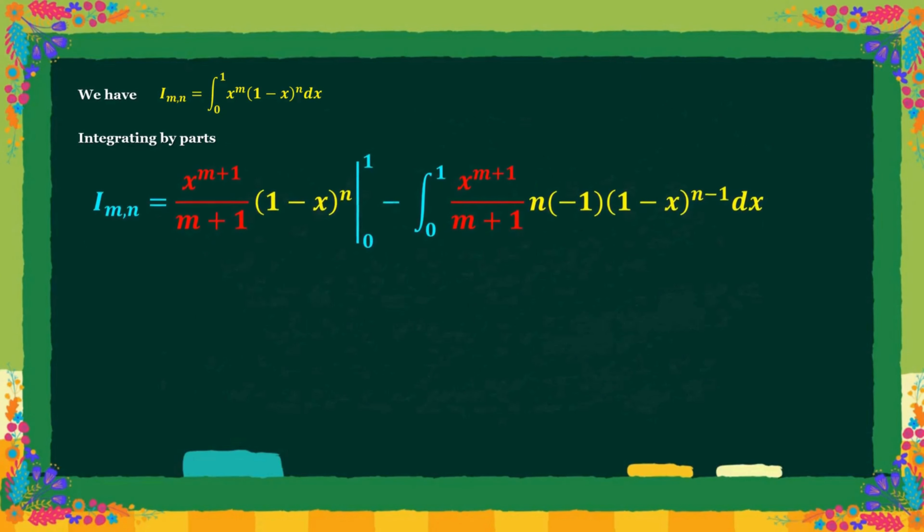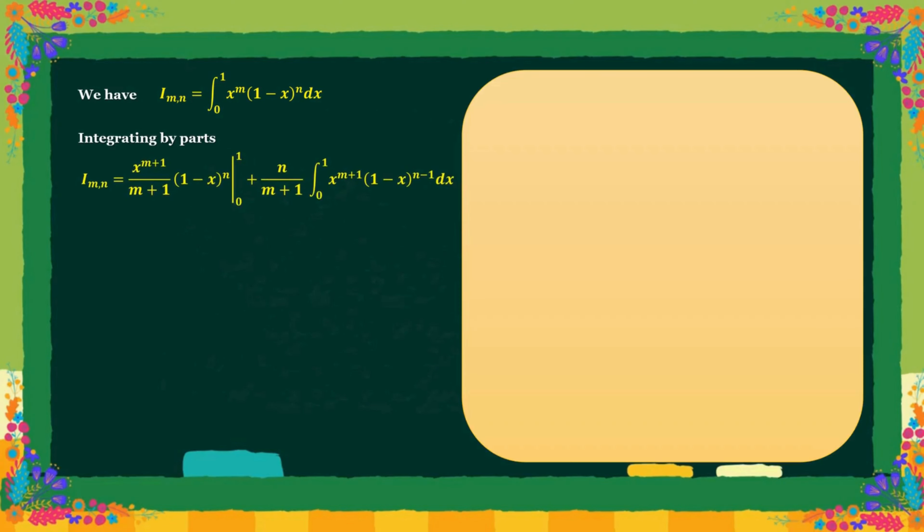Simplifying, we get... Now the first term of the right hand side is equal to 0.